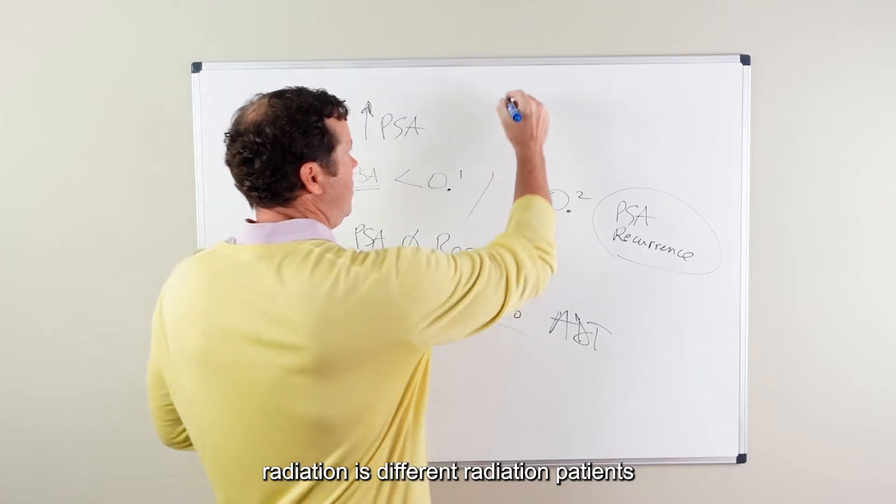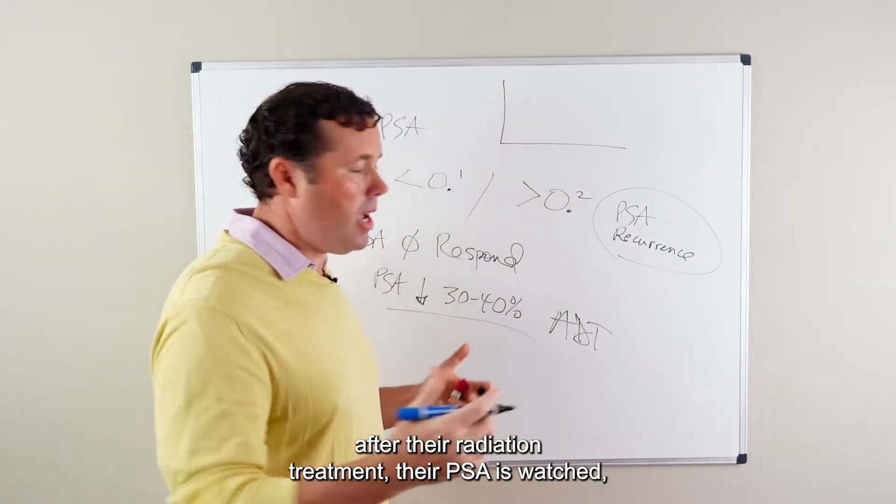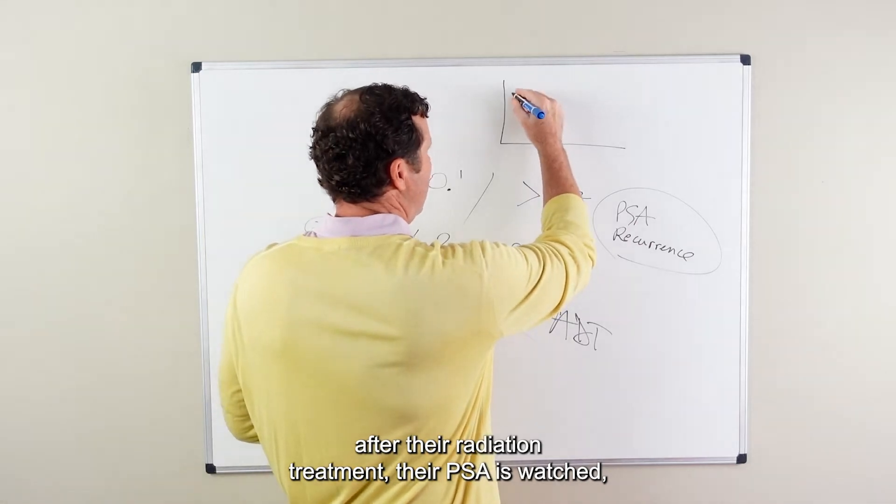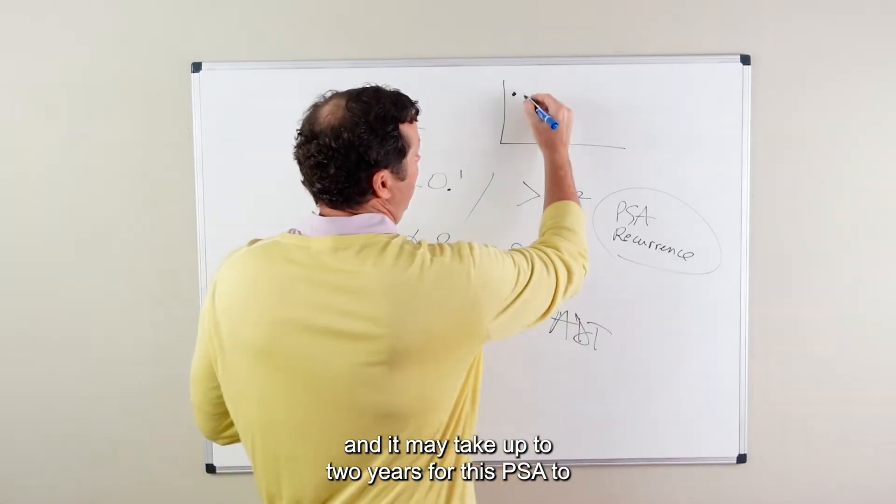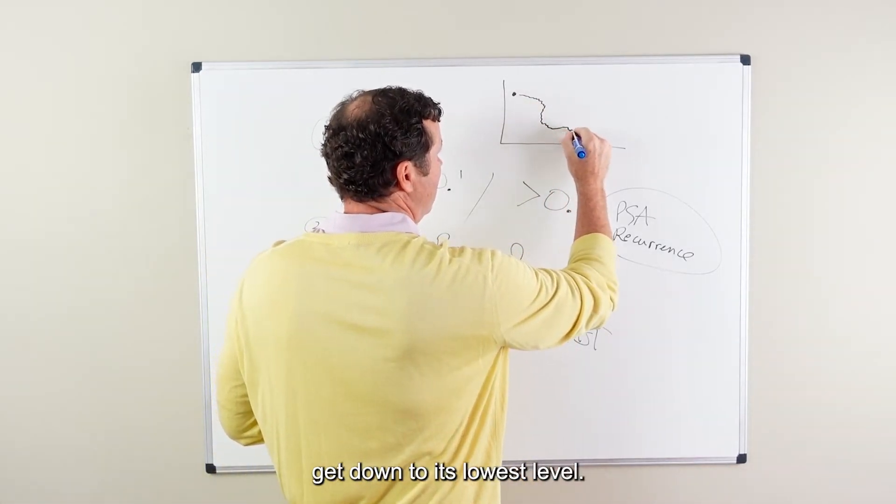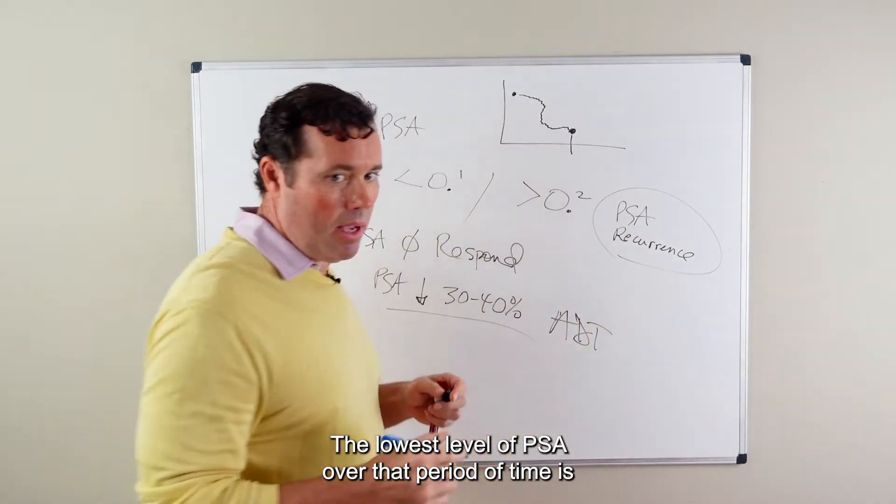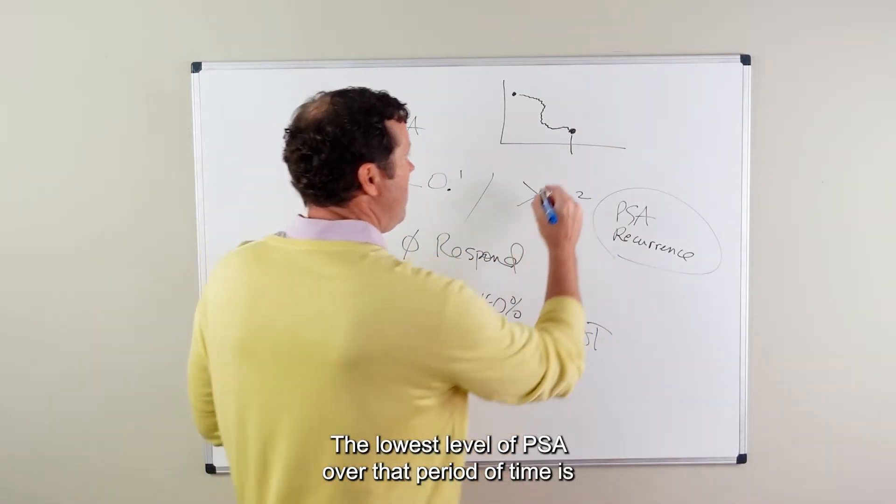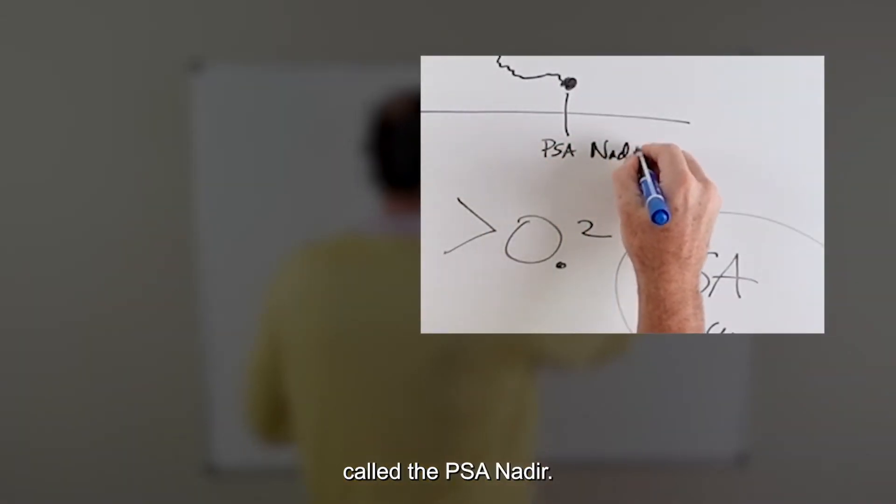Radiation patients, after their radiation treatment, their PSA is watched. And it may take up to two years for this PSA to get down to its lowest level. The lowest level of PSA over that period of time is called the PSA nadir.